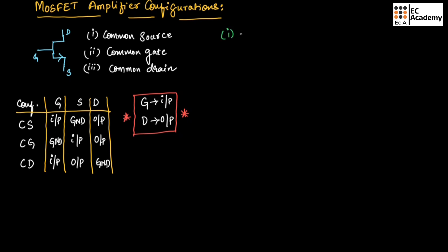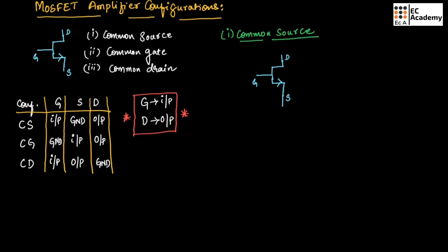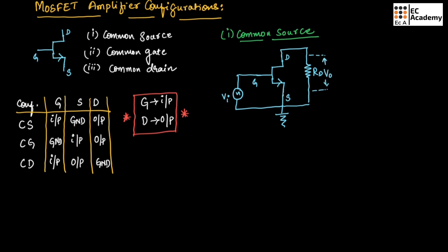Let us now draw different circuits for the different configurations. First, the common source configuration: input is connected to the gate terminal, output is connected to the drain terminal, and source is connected to ground. At the gate terminal we connect the input, and at the drain terminal we measure the output. We connect a resistor RD at the drain, and across this resistor RD we measure the output voltage. This is the general circuit for common source configuration.